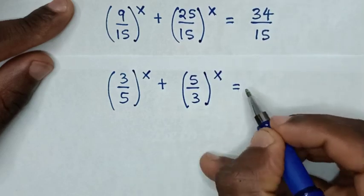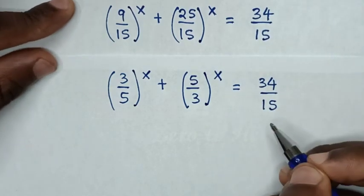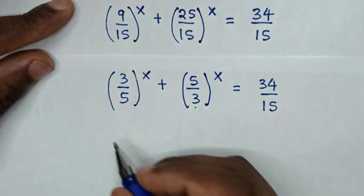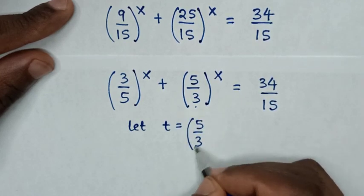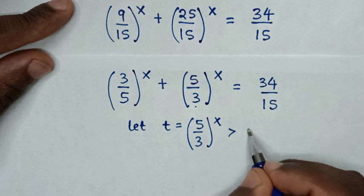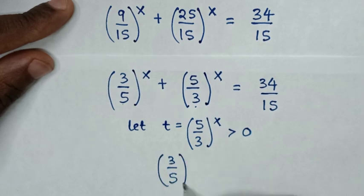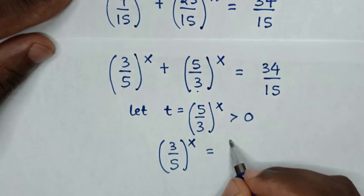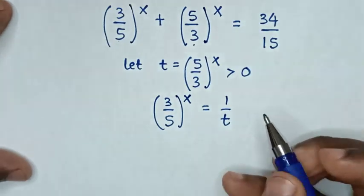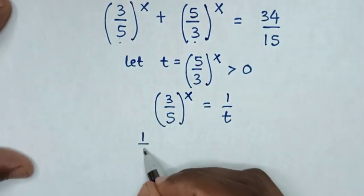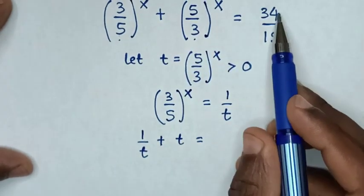In the next step, we let t equal (5/3)^x, where x is greater than 0. Then (3/5)^x equals 1 over t, because it is the reciprocal. So our equation becomes 1/t plus t equals 34 over 15.